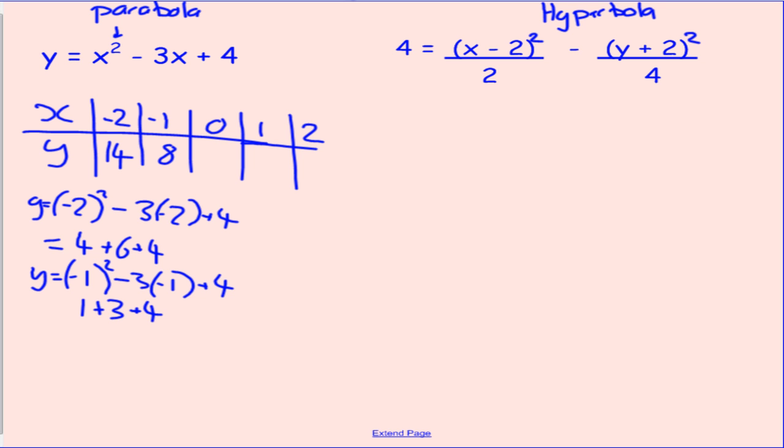When you sub in 0, all those x terms will disappear, and you'll be left with a 4. When you sub in 1, it's going to be 1 squared, minus 3 times 1, plus 4. So you're going to end up with 1, minus 3 is negative 2, plus 4 is 2.